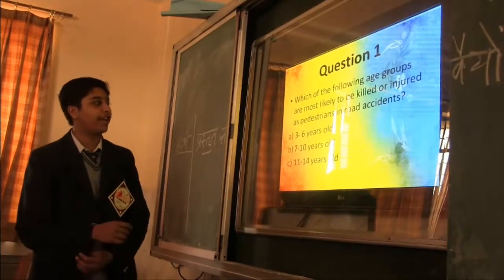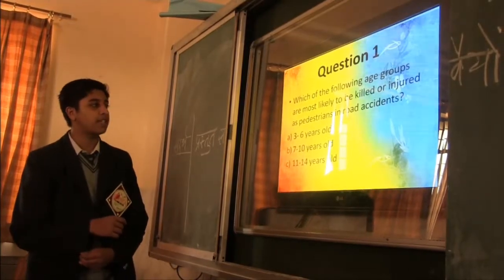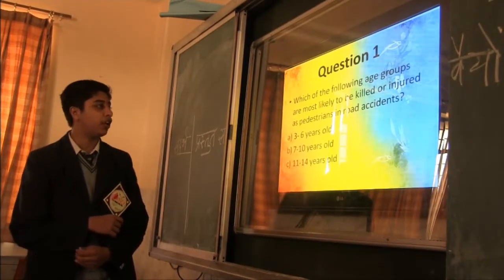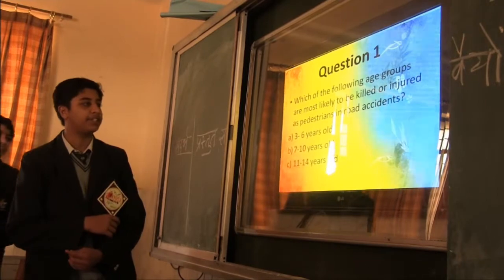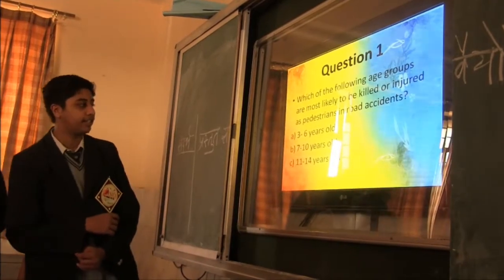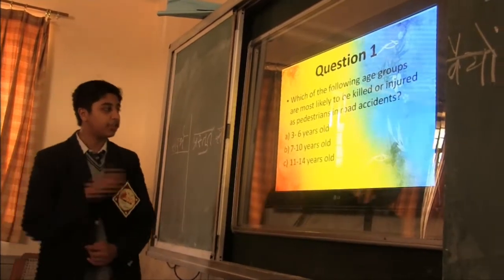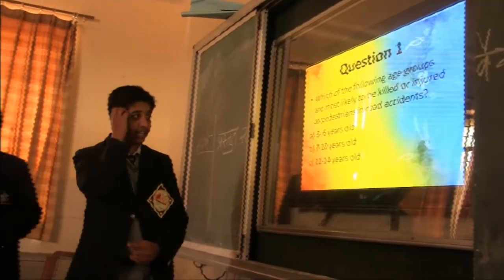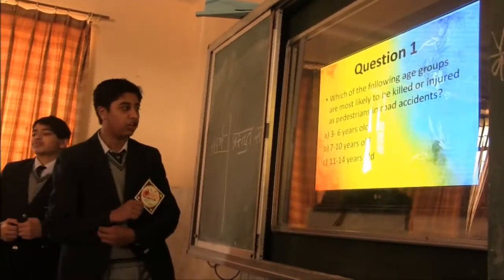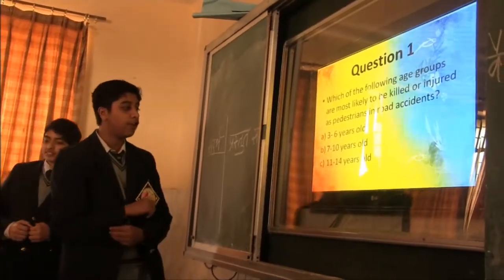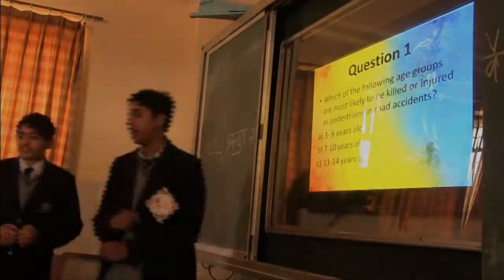Which of the following age groups are most likely to be killed or injured as pedestrians in road accidents? 3 to 6 years old, 7 to 10 years old, or 11 to 14 years old?